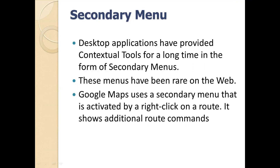The fifth contextual tool is secondary menu. This is like the right-click menu in desktop applications — web applications can also have a right-click menu, which we call secondary menus. Google Maps is an example that uses the secondary menu, which can be activated when you want to show additional routes between a source and destination. So the five contextual tools are: always visible, hover reveal, toggle reveal, secondary menu, and multi-level tools.